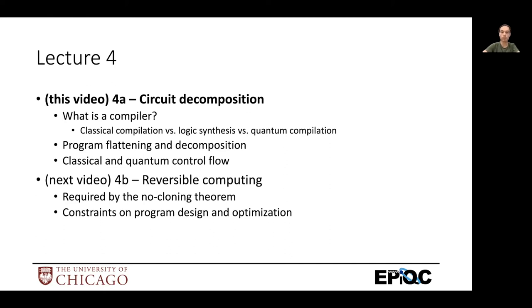And then finally we'll talk about control flow, various types, where you have a classical condition or quantum conditions and loops in your quantum algorithm, and how these get decomposed and how they're implemented in hardware. And then the next video, we'll continue with this and look closer into the requirements of reversible computing and the no cloning theorem as required by quantum physics. These give us extra constraints on how we can copy data and move data around.